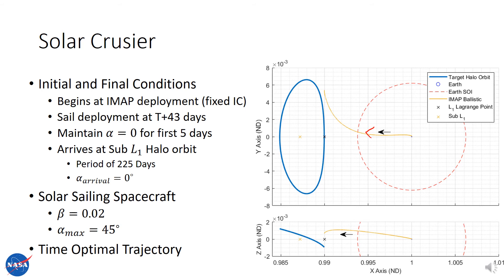This sub-L1 halo orbit is very well suited for heliophysics research, which is what Solar Cruiser will be conducting. The Solar Cruiser mission will have a beta value — that is, the solar sail parameter — of 0.02, and a maximum alpha of 45 degrees. In designing the optimal trajectory from the post-checkout state to the sub-L1 halo orbit, we will be using a time-optimal trajectory.